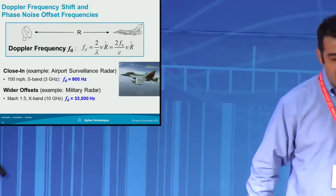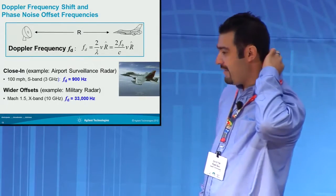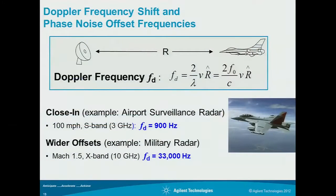How do you actually figure out what exactly your system needs? Here we have a radar example — it's a fairly straightforward equation. You're trying to figure out the Doppler offset frequency, because that's what you want to detect in your radar system. It's two times the fundamental frequency you're transmitting at over the speed of light, times the radial velocity of the return signal.